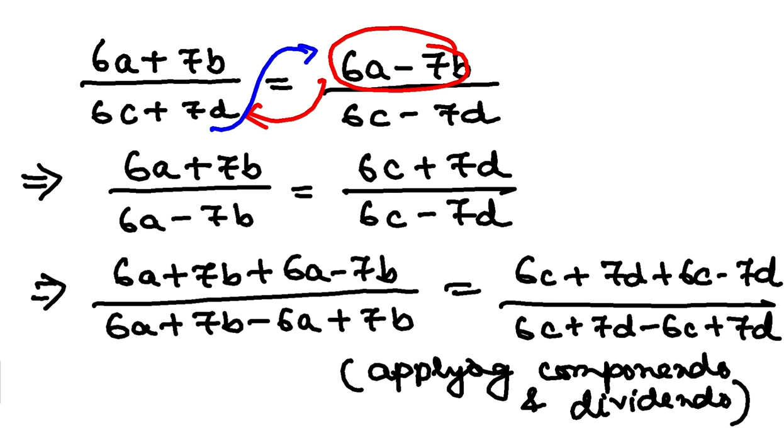Now let us check here. So many things will be cancelled, 7b, 7b, here 6a, 6a, here 7d, 7d, here 6c, 6c.